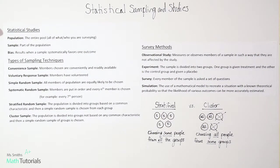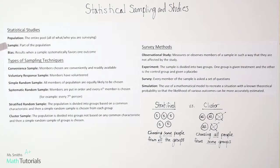Our statistical studies terms start with population — that is the entire pool, or all of what or who you're surveying. For a sample, that's when you just take a part of the population, maybe asking a few selected people rather than everyone. Bias results when a sample systematically favors one outcome, and anytime they're doing statistical studies, they try to avoid bias.